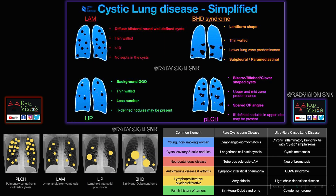Other differentials for cystic lung disease include Birt-Hogg-Dubé syndrome, where you can see multiple paramediastinal cysts. You can pause the slide to review other causes of rare and ultra-rare cystic lung disease.